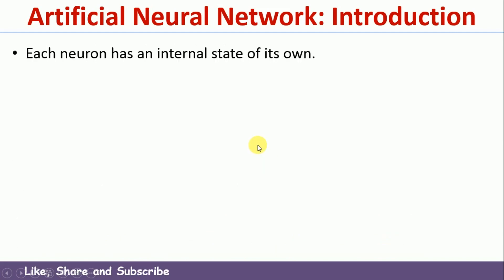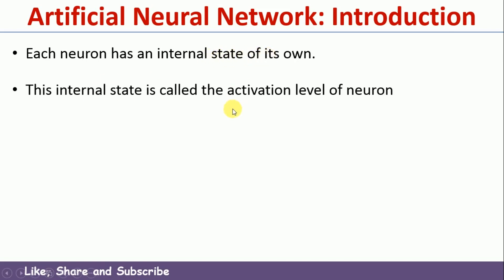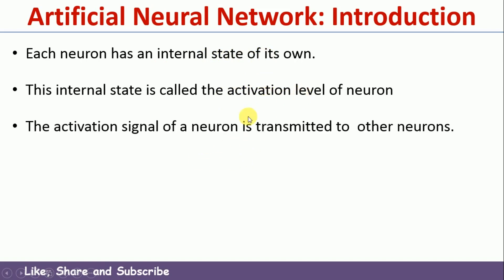Each neuron has an internal state of its own. There are multiple neurons in an ANN, and each of them has its own internal state. That internal state is called the activation level, and the activation level is transmitted to other neurons with the help of the link.